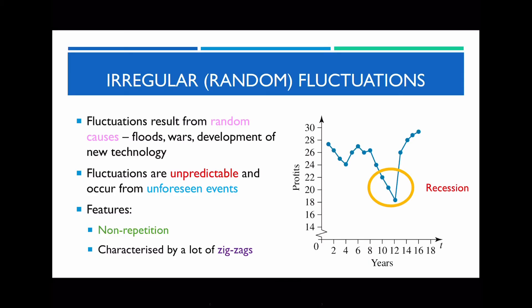We're now going to look at the very last type of fluctuation: irregular or random fluctuations. Random fluctuations occur due to random events such as floods, wars, new technology, or other unforeseen events. You can distinguish whether a time series graph has irregular or random fluctuation by: firstly, there's no repetition at all; and lastly, there is a significant spike — meaning it drastically increases or decreases — or there are a lot of zigzags, which indicates something is irregular.